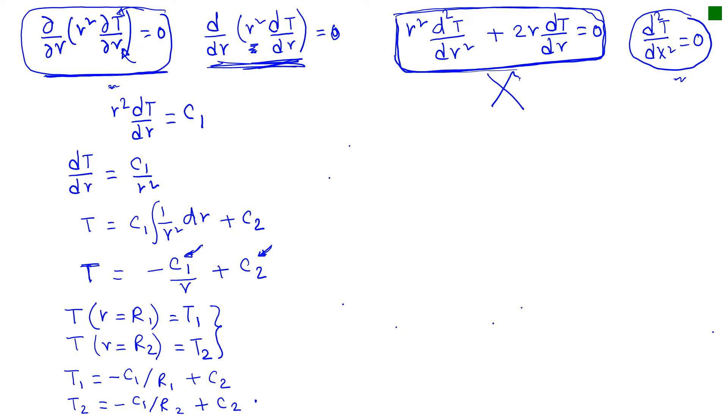So if I now subtract T1 from T2 then we get T2 minus T1 is equal to minus C1 times 1 over R2 minus 1 over R1. And so from there I find C1 is equal to T2 minus T1 over 1 over R2 minus 1 over R1.